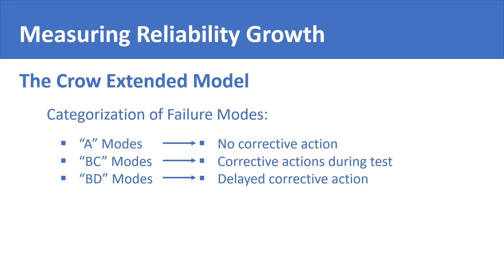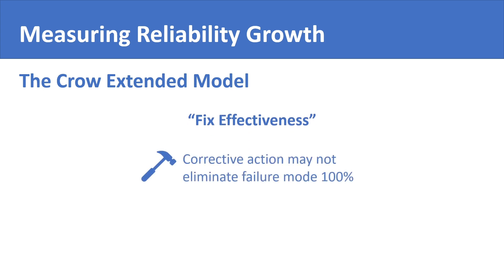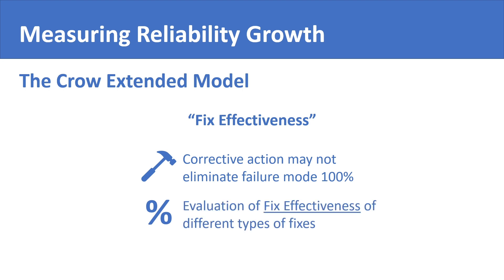The test phase now considers which type of failure mode the test data is coming from and adjusts the model accordingly. The Crow Extended model also introduces the concept of fixed effectiveness, meaning that a corrective maintenance action may not completely eliminate a failure mode and that a residual failure rate will remain in the model. Therefore, the Extended Crow model also evaluates the fixed effectiveness of different types of corrective actions, which can help in determining the corrective actions that most positively impact reliability growth.